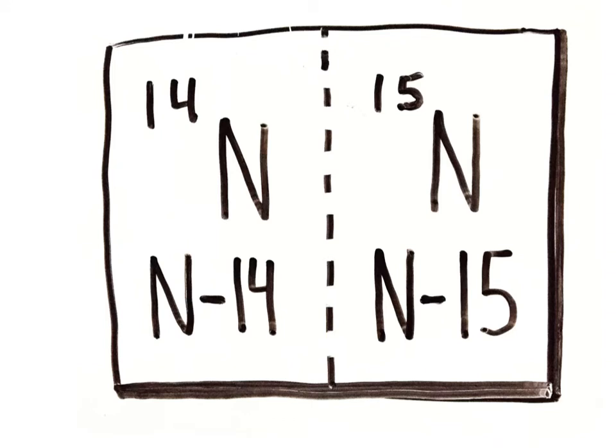Isotopes are often written with their mass number as a superscript to the upper left of the symbol, such as N-14 or N-15, or their mass number is included after a dash following the symbol.